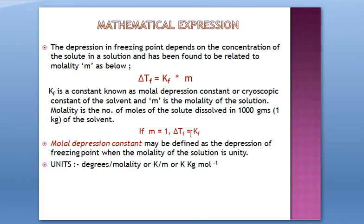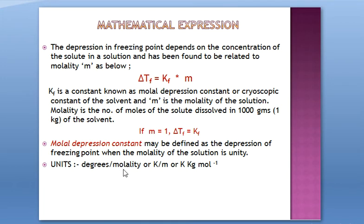To define the molal depression constant: if you assume the solution has a molality equal to one, then from the equation delta Tf = Kf × m, the depression in freezing point equals Kf. So the molal depression constant is defined as the depression in freezing point when the molality of the solution is unity (m = 1). Its units — from the equation Kf = delta Tf / m — are degrees per molality, or K·kg·mol⁻¹. You can express it in any unit system.